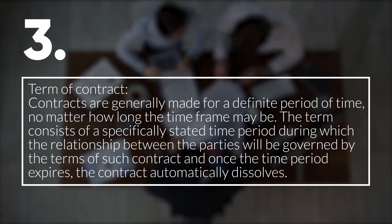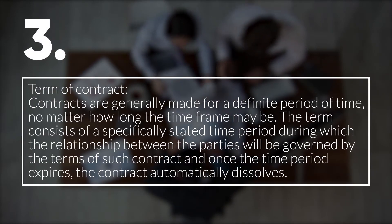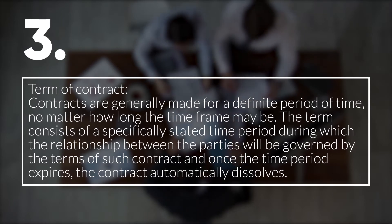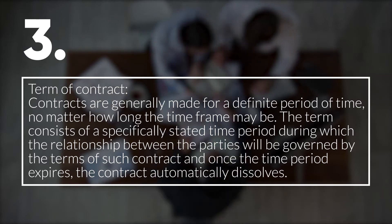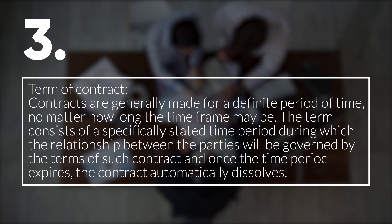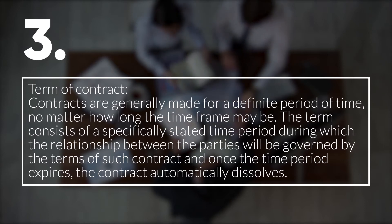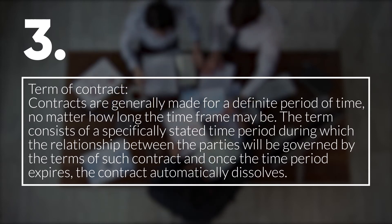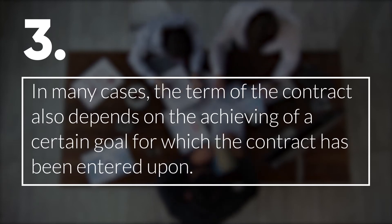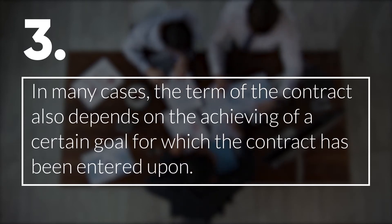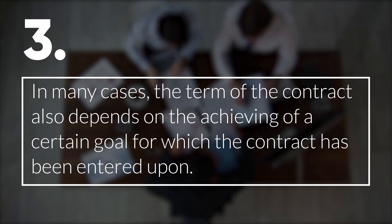3. Term of Contract. Contracts are generally made for a definitive period of time, no matter how long the timeframe may be. The terms consist of a specifically stated time period during which the relationship between the parties will be governed by the terms of such contract, and once the time period expires, the contract automatically dissolves. In many cases, the term of the contract also depends on the achieving of a certain goal for which the contract has been entered upon.